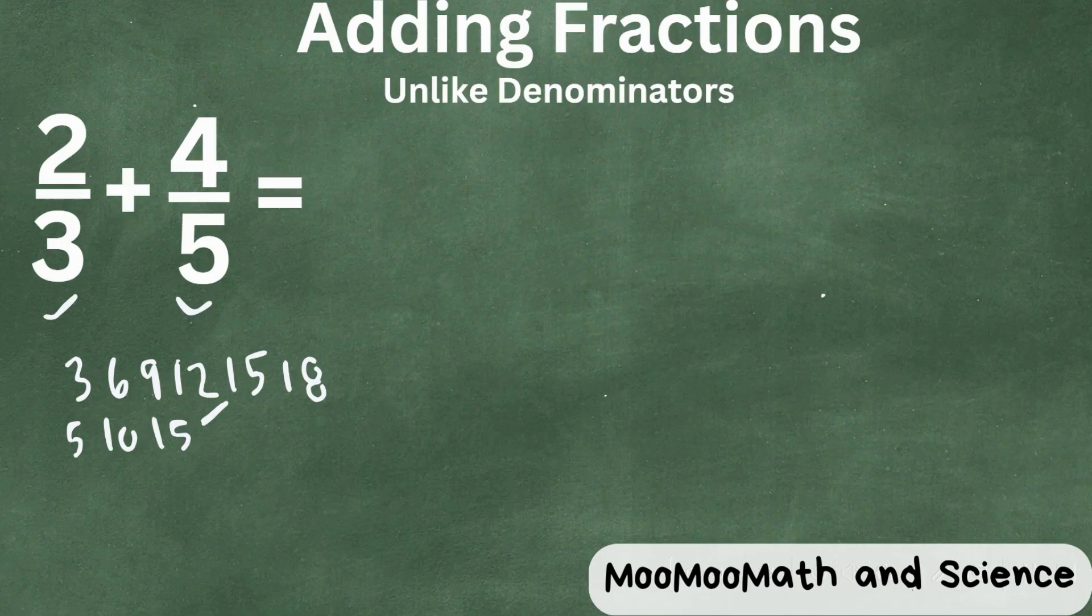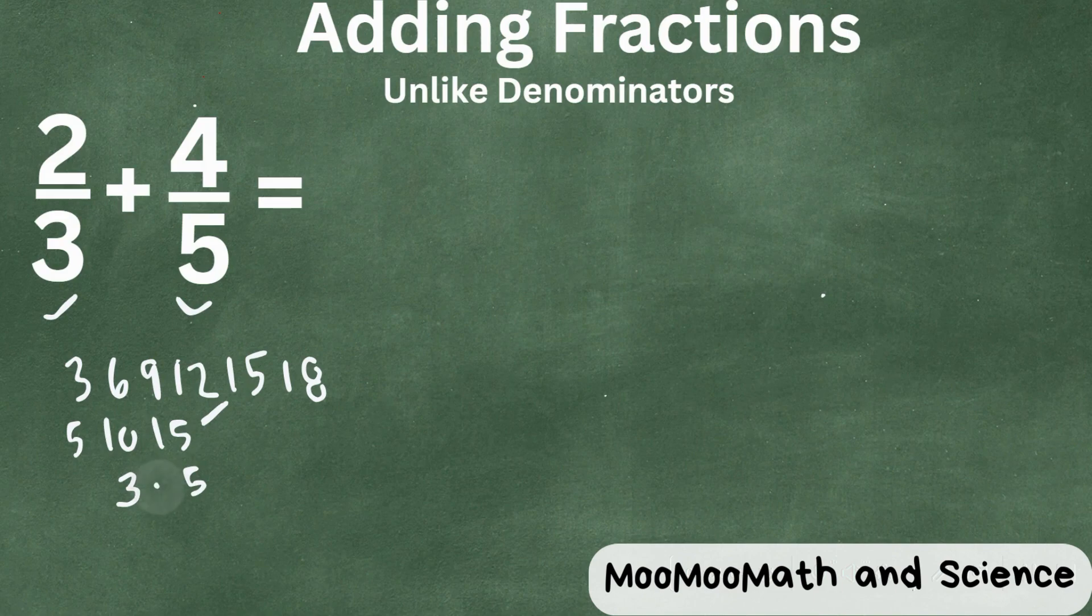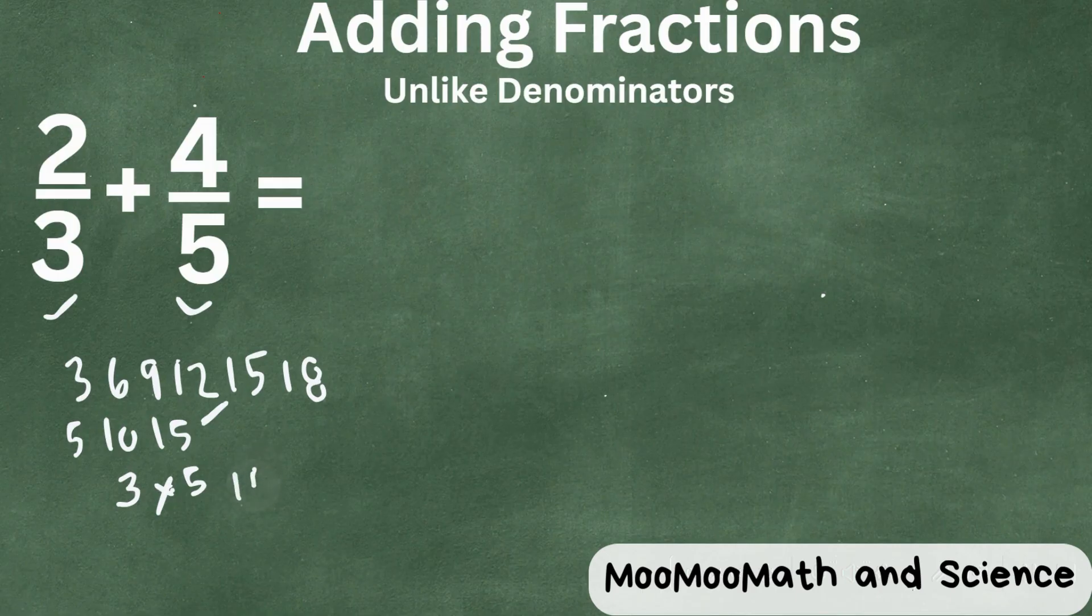And since three is prime and five is prime, with a factor tree, you multiply the prime numbers and exclude duplicates. So I could just multiply three times five and that would give you the same lowest common denominator.